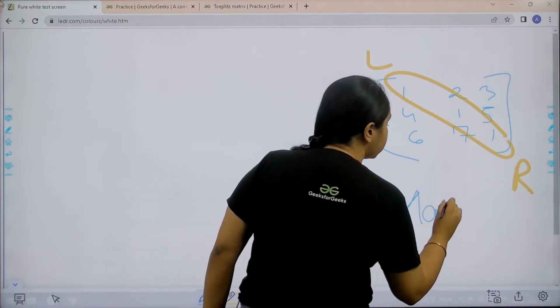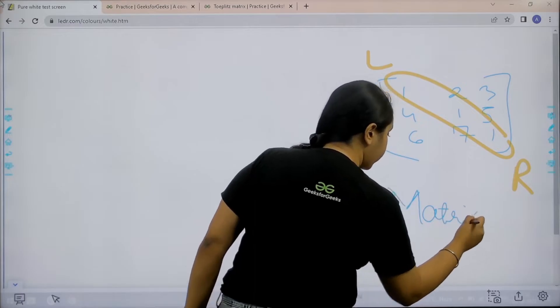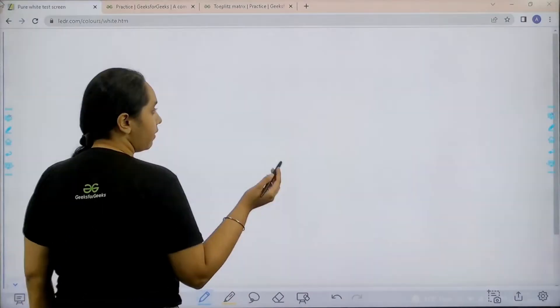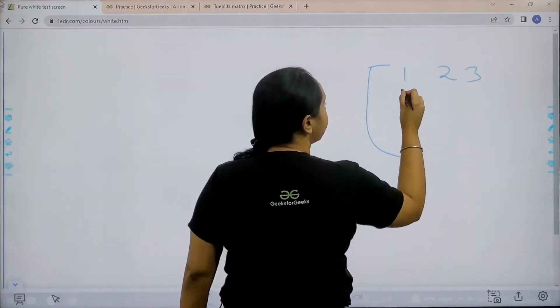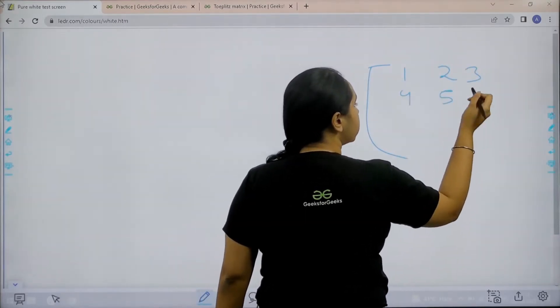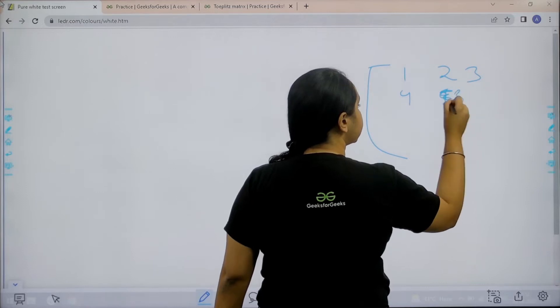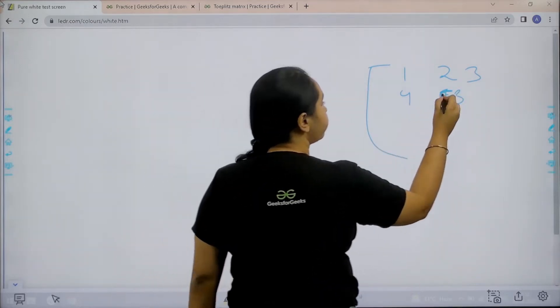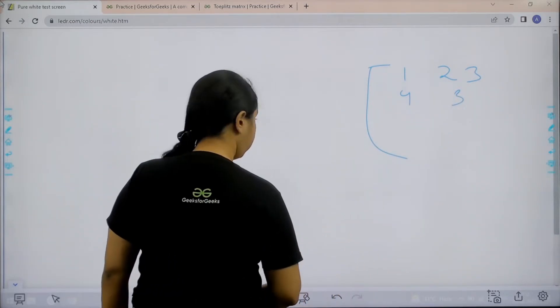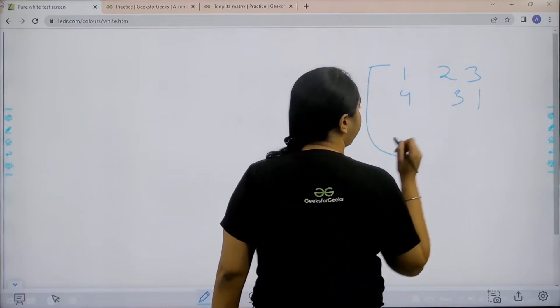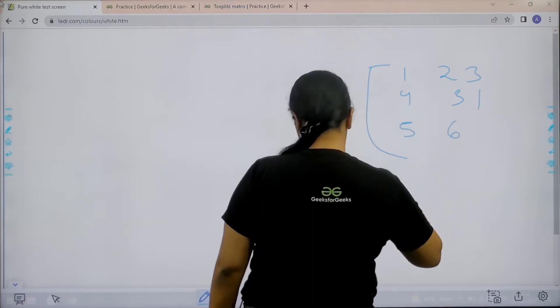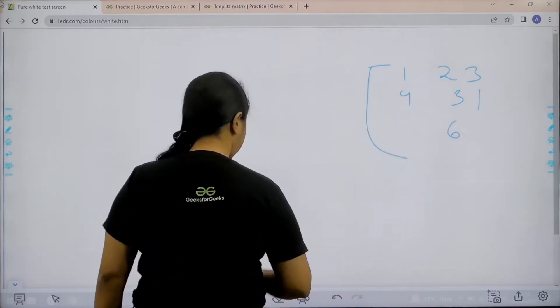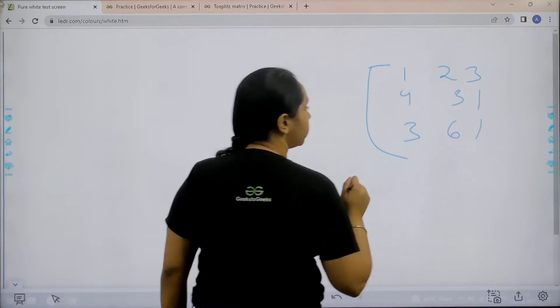Now remember there is a rule it should be from left to right. Now let's take another example. Let's say I have 1, 2, 3, then I have 4, 3, 1, and then I have 5, 6, 3 and 1.